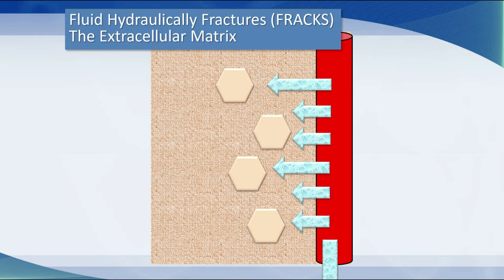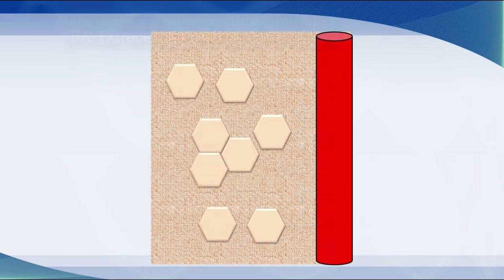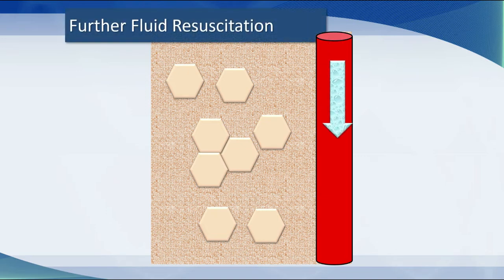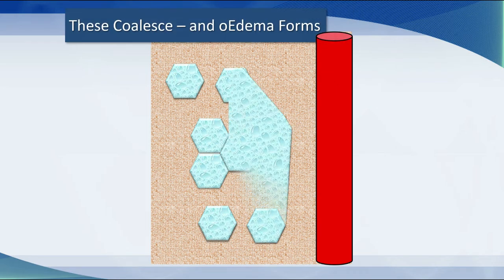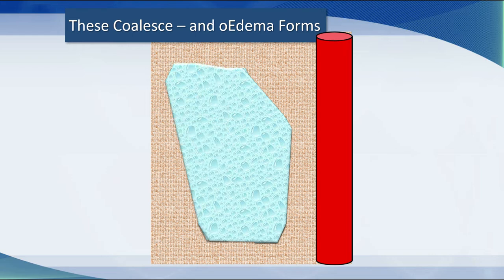Here is a different cartoon of that extracellular space. Think about this textured space being your nicely structured gelatin. With aggressive fluid resuscitation, like Sam got in his first day, a lot of that fluid extravasates into the extracellular matrix and starts to hydraulically fracture — to frack — that extracellular matrix. The matrix is damaged, and with further fluid resuscitation, pockets of fluid collect in the extracellular matrix. When they coalesce, the tissue goes from being springy to boggy, and when you put your finger in, a divot stays there.